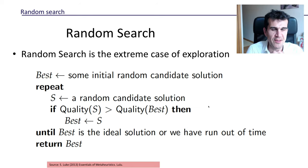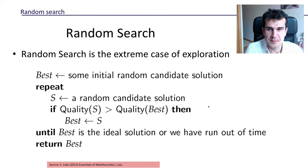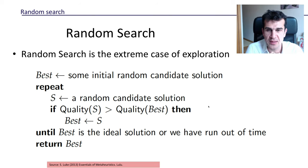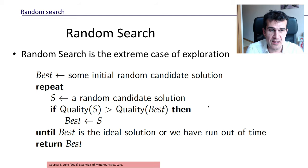Hi guys. In this video we're going to see what is probably the most basic, the simplest algorithm you can think of to try to find the optimal solution in a certain space of candidate solutions. This is called random search, and it essentially consists in sampling a certain number of candidate solutions and selecting the best one in the sample.